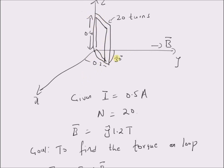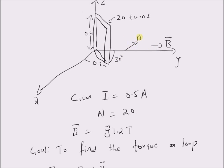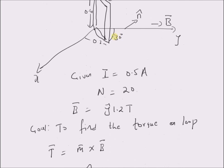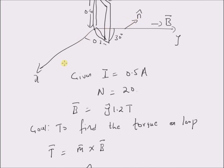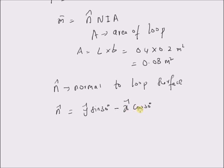In this problem, since the plane of the loop makes an angle of 30 degrees with the y-axis, the normal should be in this direction. The normal basically makes an angle of 60 degrees with the y-axis. Hence, it can be written as y-cap sin(30°) minus x-cap cos(30°), because the normal vector is in a direction opposite to the positive x-axis — that is, it is in the negative x direction. So the normal is y-cap sin(30°) minus x-cap cos(30°), which is equivalent to y-cap (1/2) minus x-cap (√3/2).